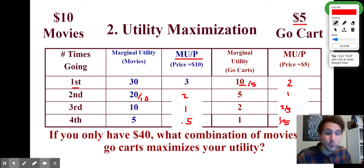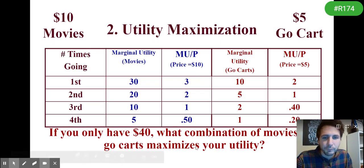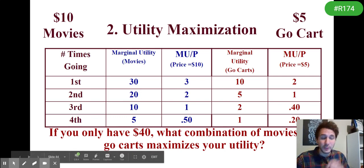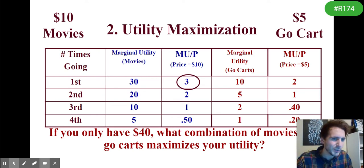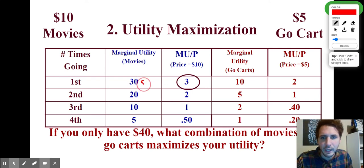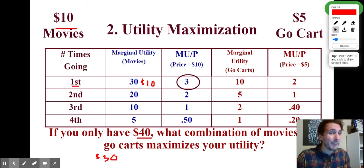What will I choose? I choose whatever gives me the most bang for my buck and go down the line until I'm out of money. First choice: movies at 3 utils per dollar — spend $10, leaving $30. Next, movies and go-karts are tied at 2 utils per dollar each. I can afford both: second movie costs $10 (down to $20), first go-kart costs $5 (down to $15). So I go go-karting and watch another movie.